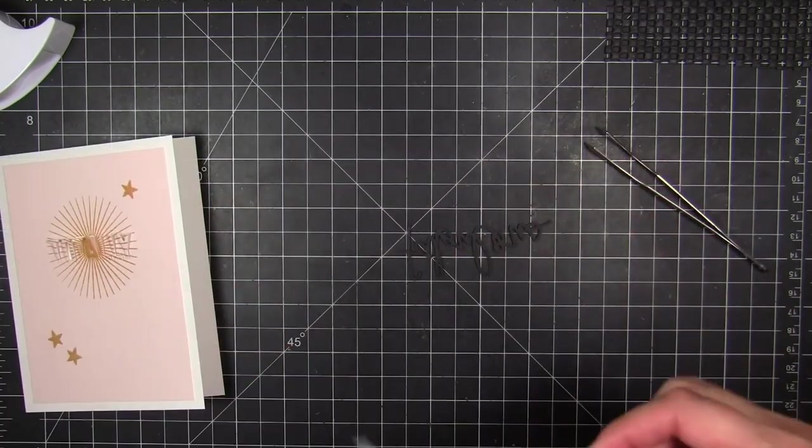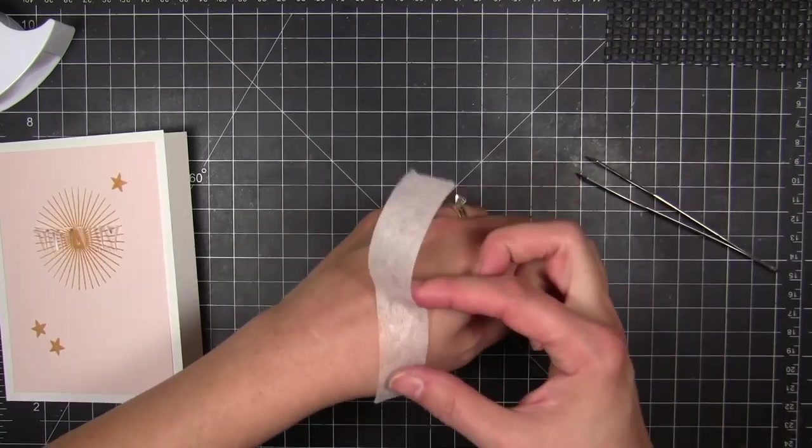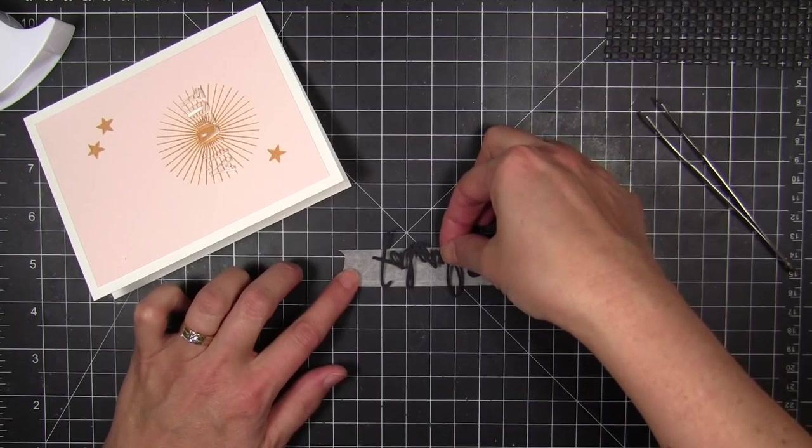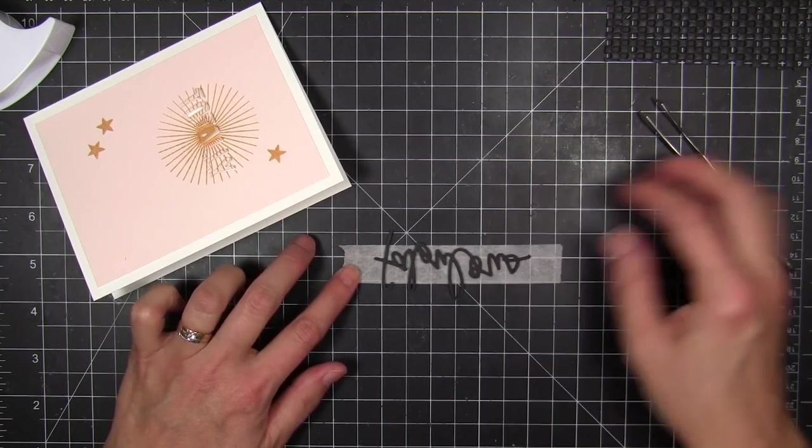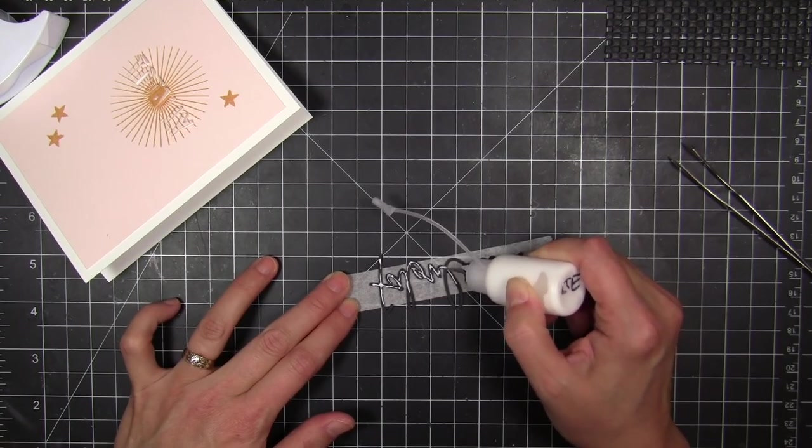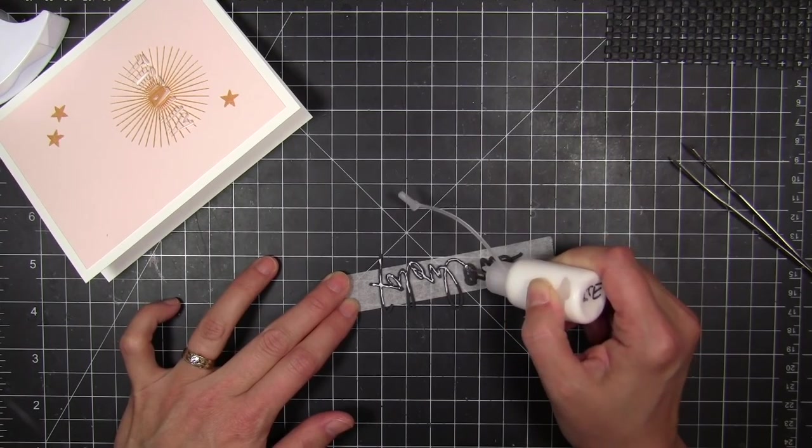Now to mount it to my card, I'm going to use some micropore tape. And the reason I switched to micropore tape is that it's translucent. I can see through it. And I put the die cut face down this time onto the tape so that I can put glue on the back, again with that fine tip glue applicator.